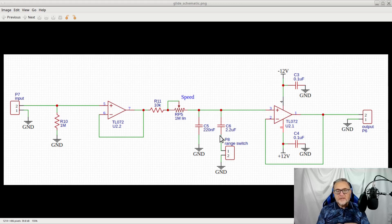The signal that comes from pin 7 charges C5 and eventually C6 through resistors R11 and RP5, which is a linear potentiometer that can be used to change the timing constant of the RC circuit.